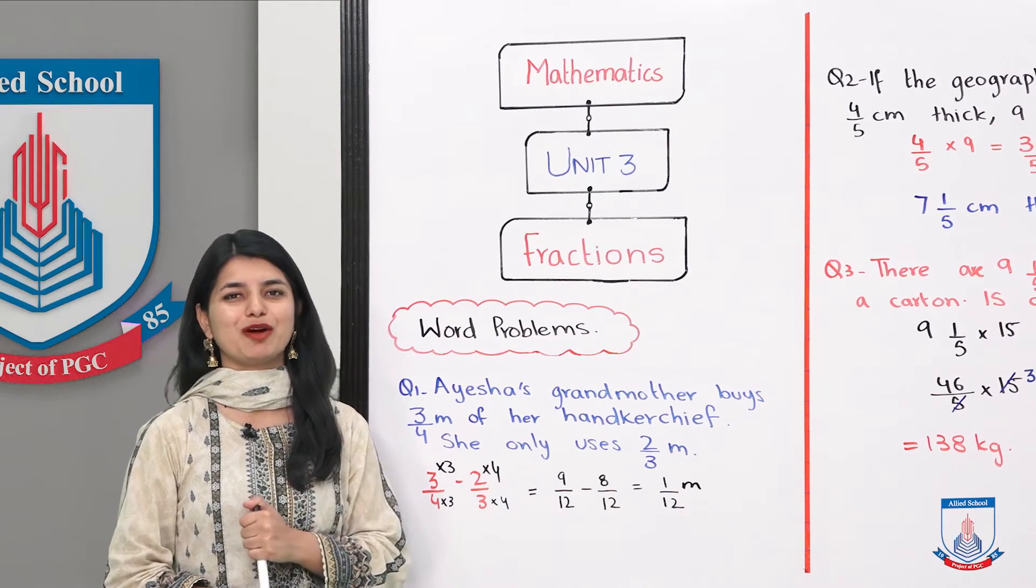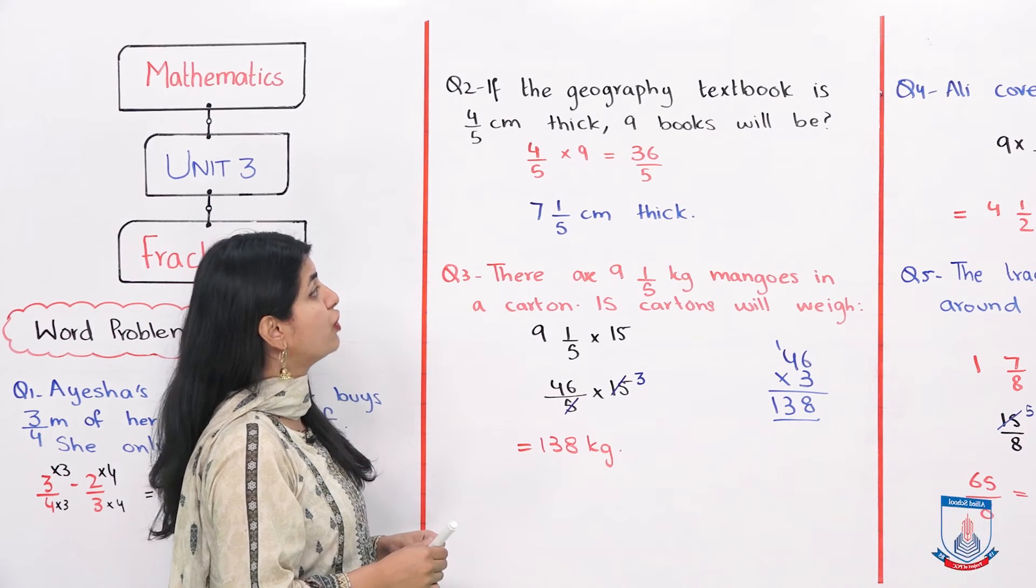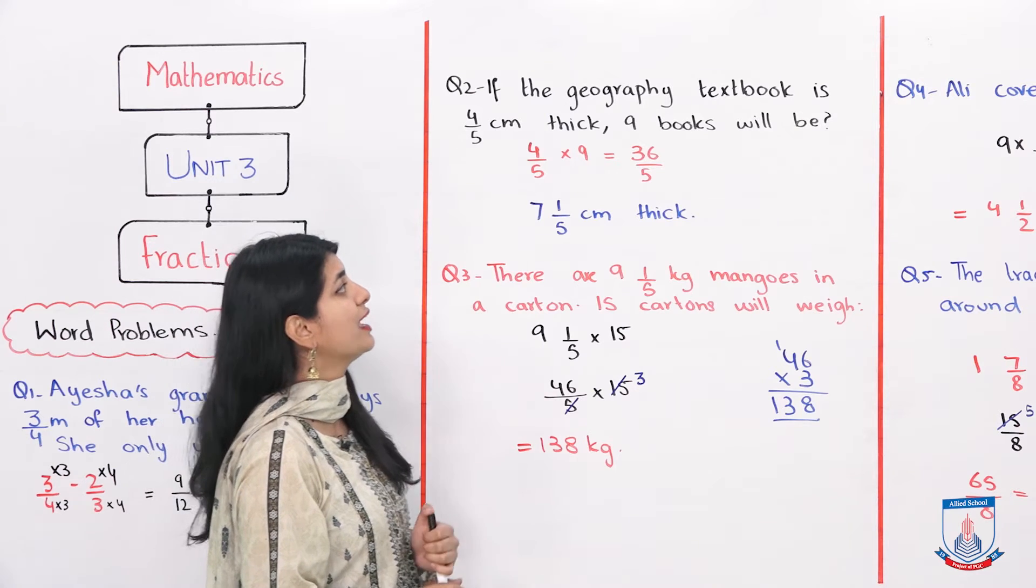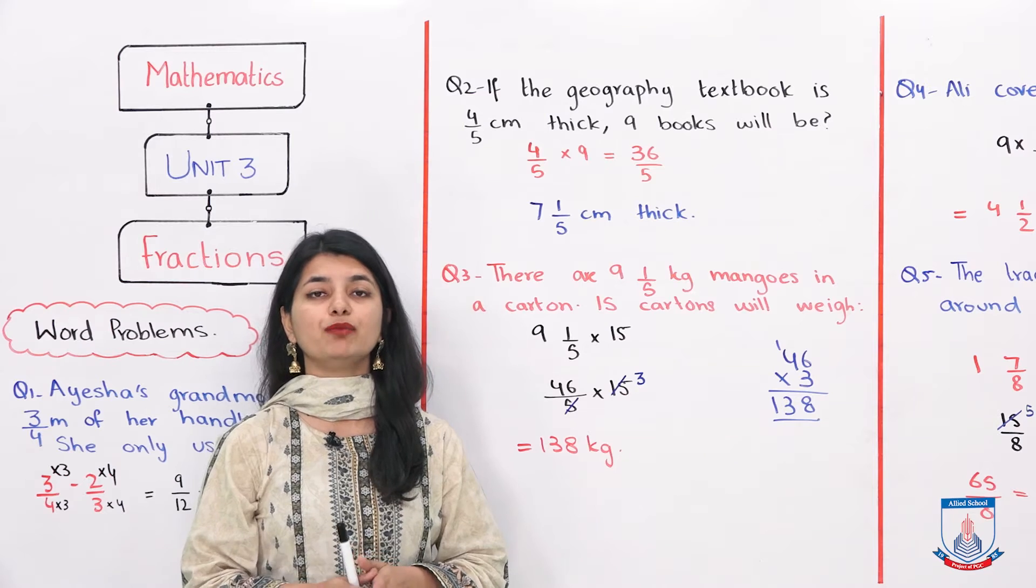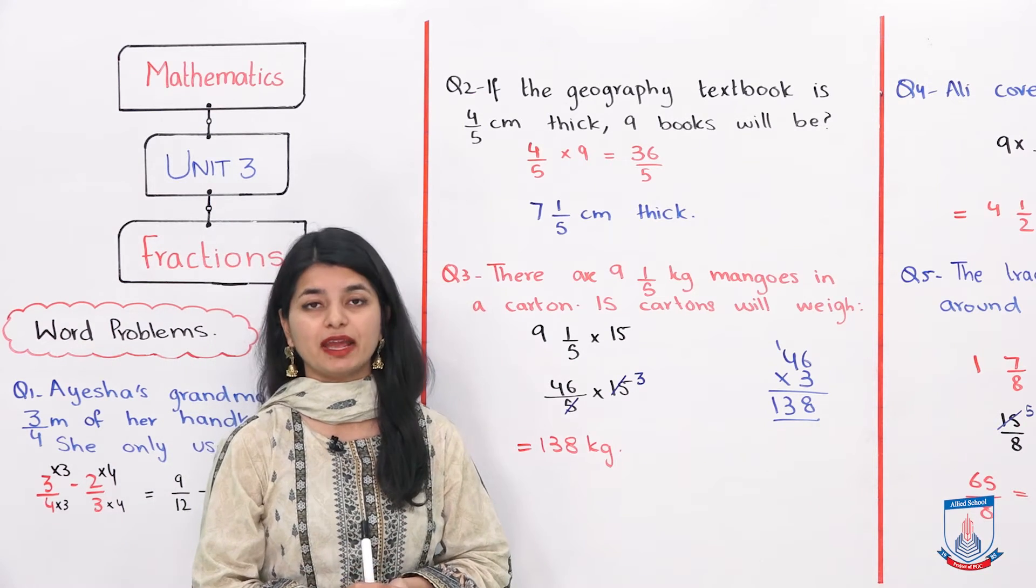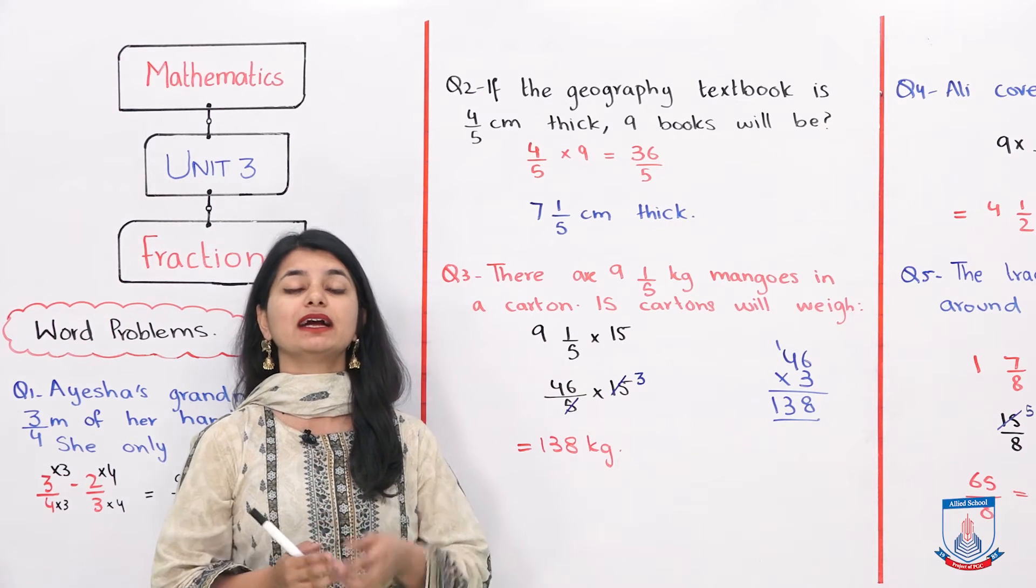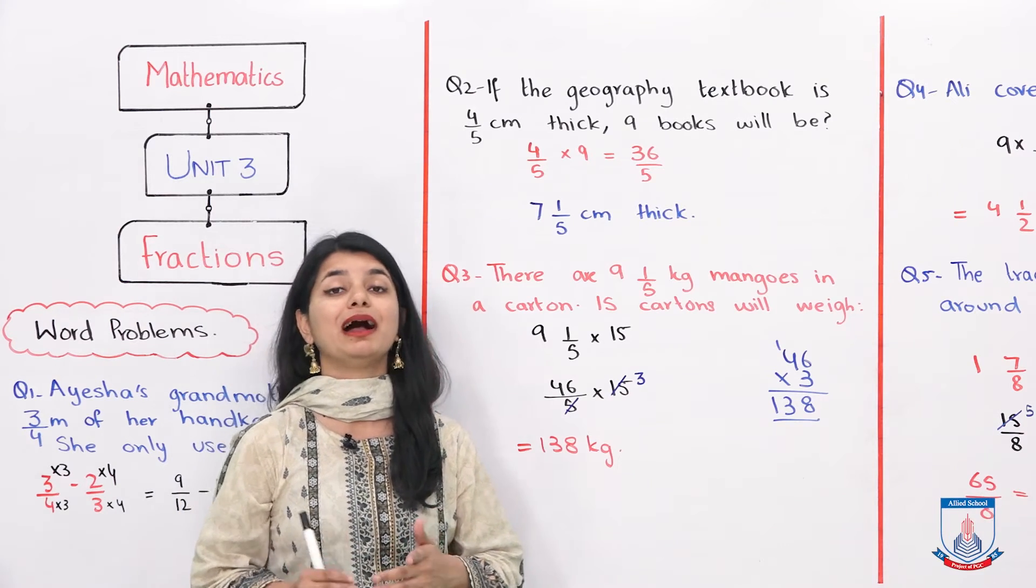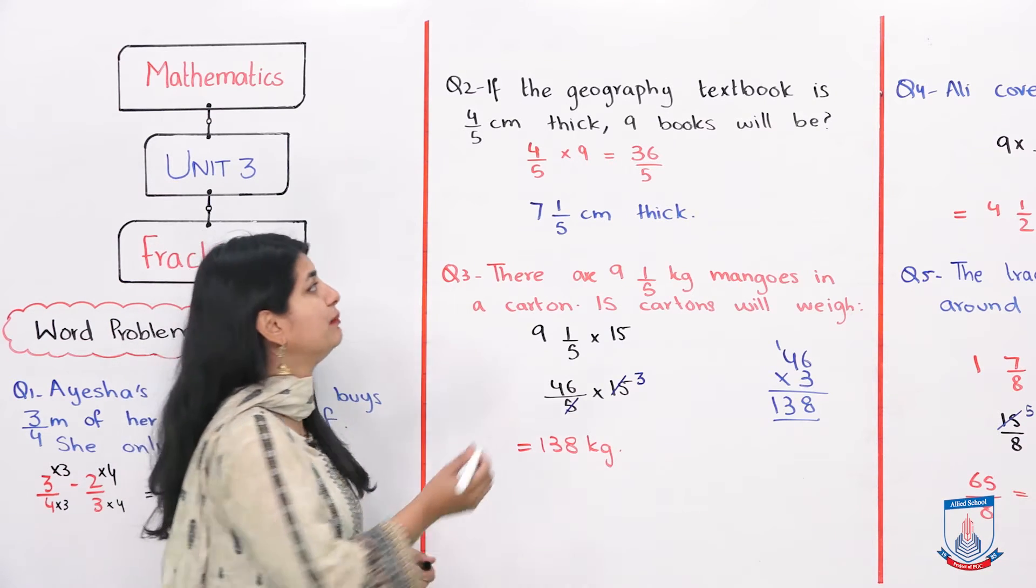Let's look at the second word problem. Question number 2 is, if the geography textbook for grade 5 is 4 over 5 centimeters thick, 9 such books will be? They said that the geography book is 4 over 5 centimeters thick. If you have 9 books like this, what will become your total thickness? If you have 4 by 5, 9 times, what will we do? We will multiply 4 by 5 by 9.